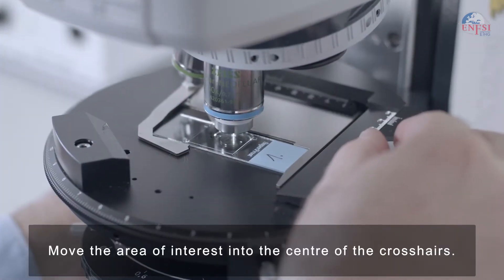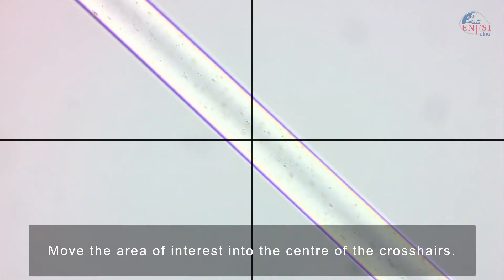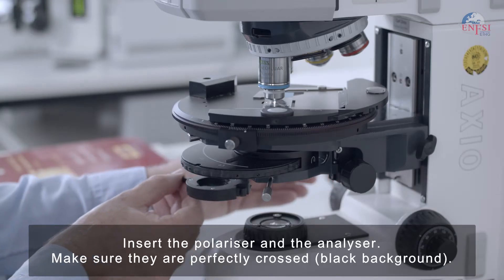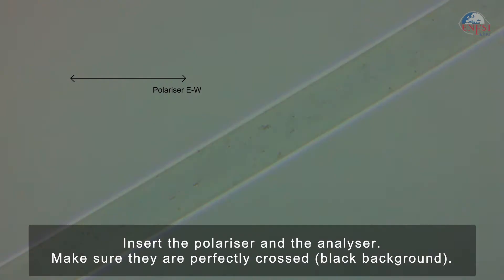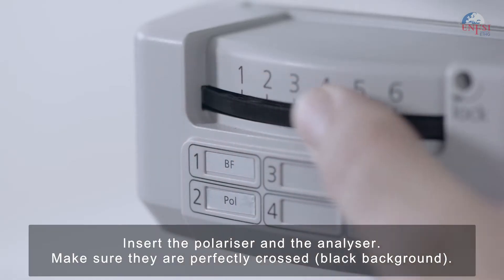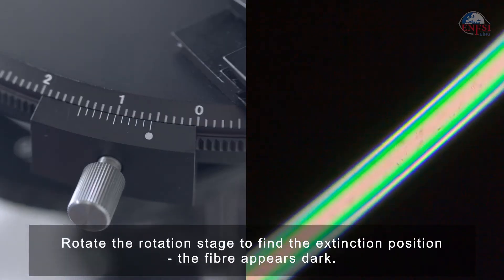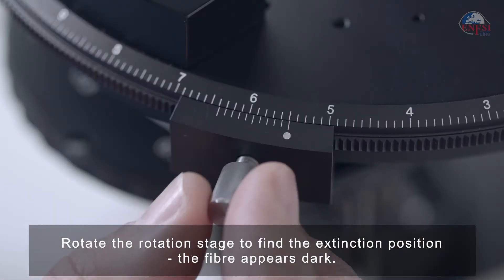Move the area of interest into the center of the crosshairs. Insert the polarizer and the analyzer. Make sure they are perfectly crossed. The background has to be black. Rotate the rotating stage to find the extinction position, so that the fiber appears dark.